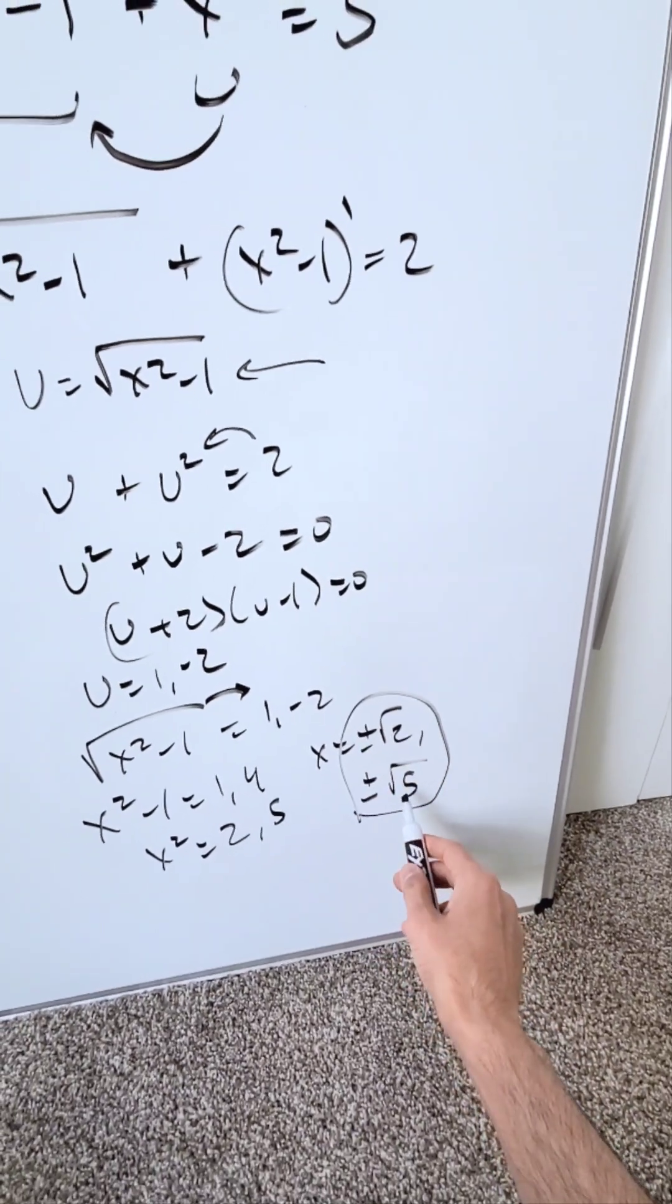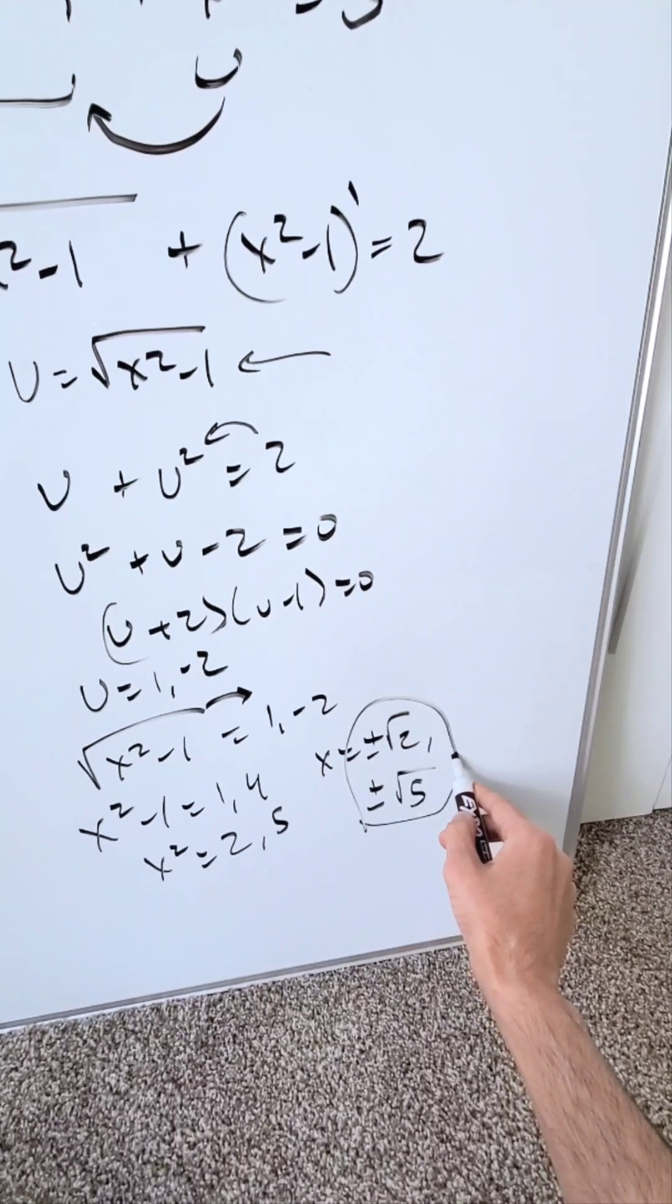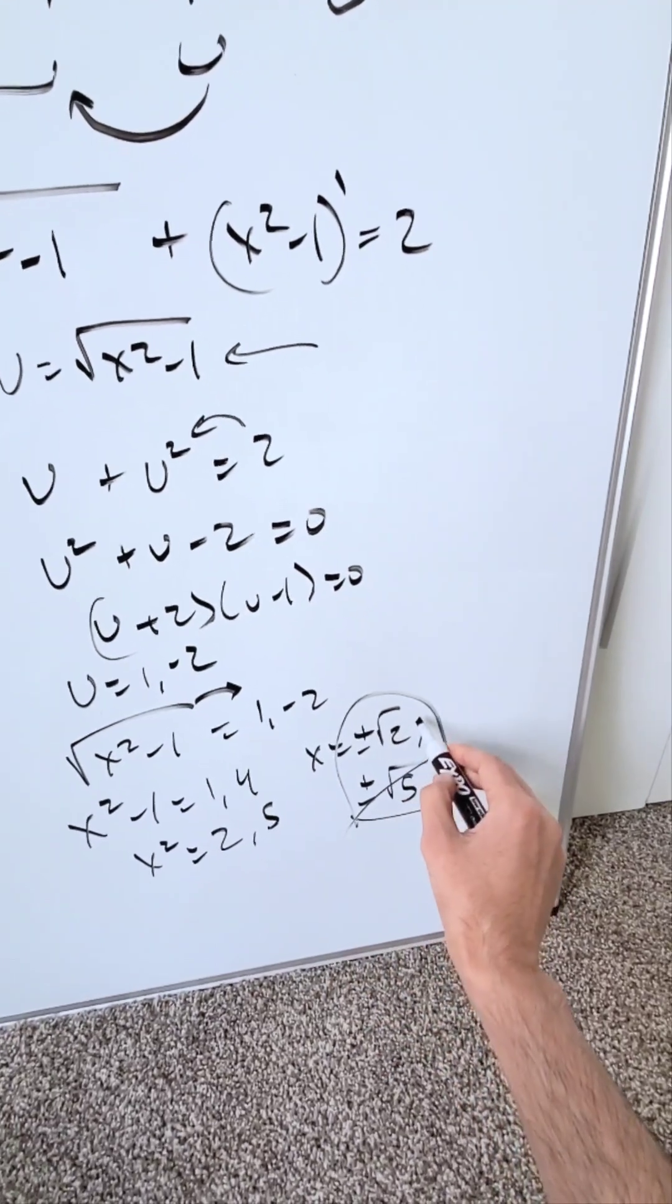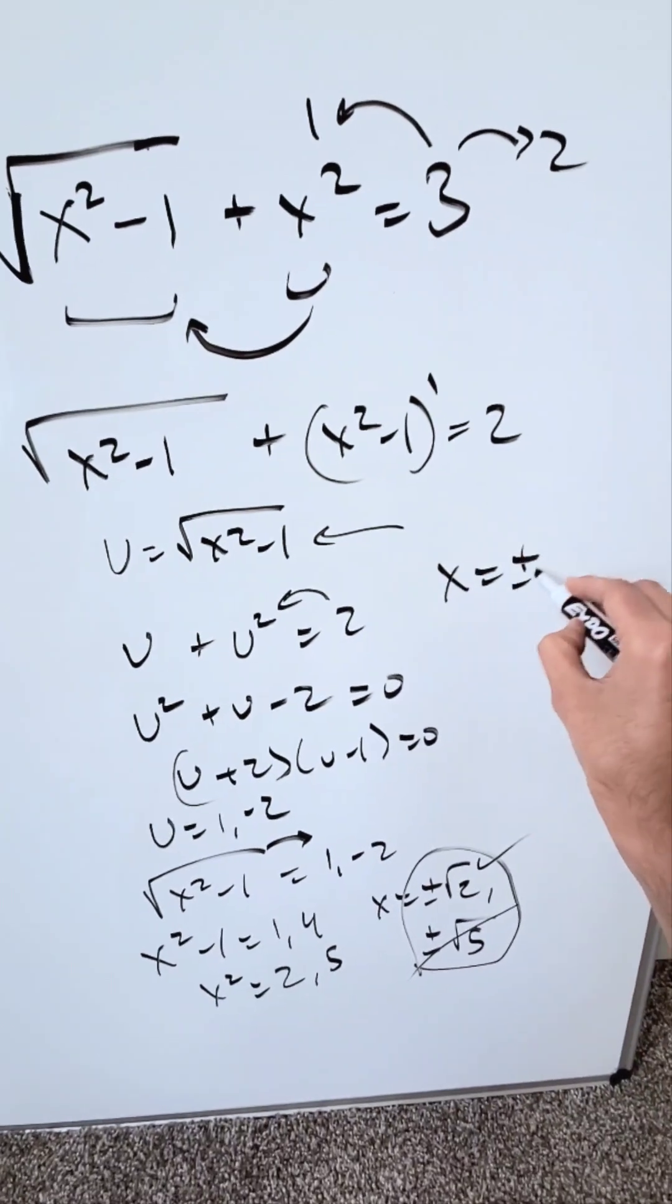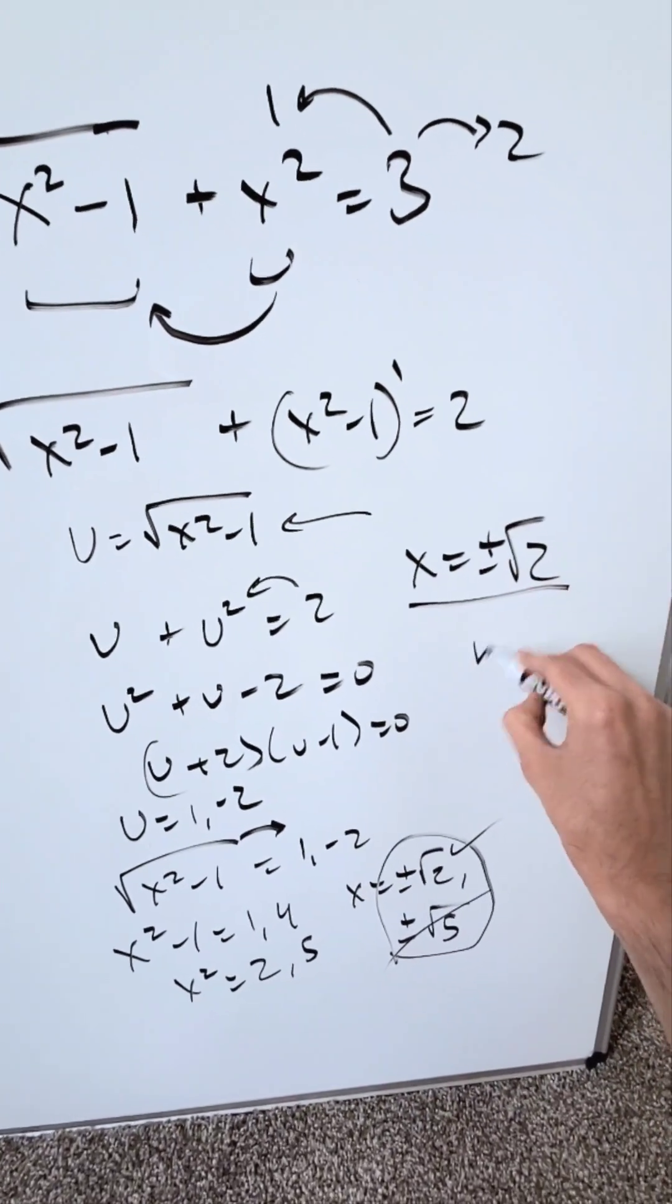Now you have to test these solutions. When you test them, you'll find that ±√5 does not satisfy the original equation, but ±√2 does. So the solutions are x = ±√2.